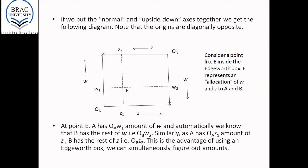Similarly, since A has OAZ1 amount of Z, B has the rest of Z, an amount equivalent to OBZ2. So an Edgeworth box allows us to simultaneously figure out amounts.